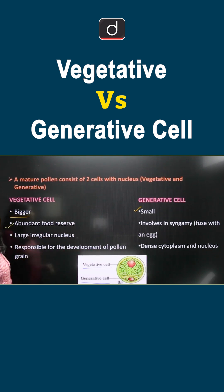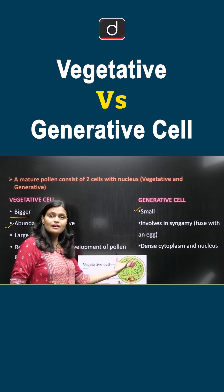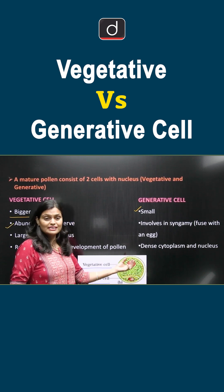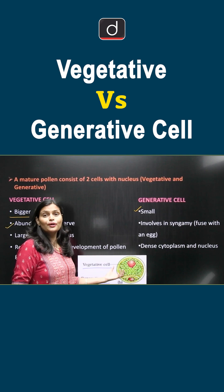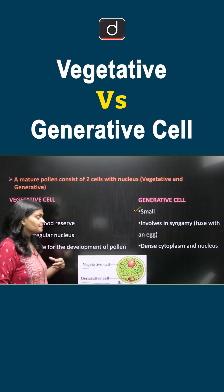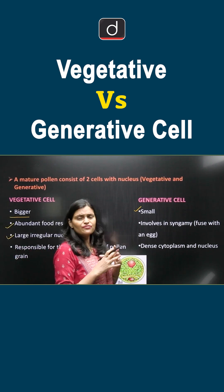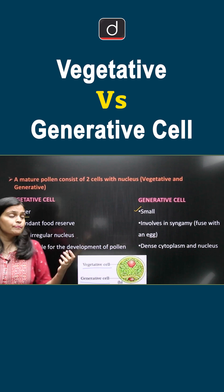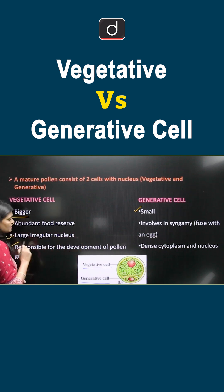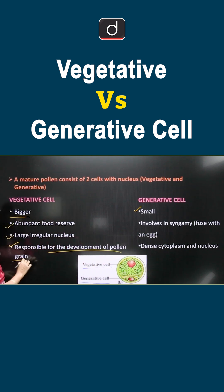The vegetative cell, since it is bigger in size, it has abundant food reserve. Basically, it has a reserve store of food. It also has a large, irregular-shaped nucleus. And it is responsible for the development of the pollen grain.